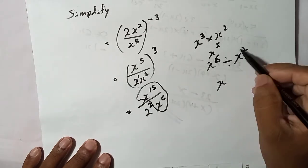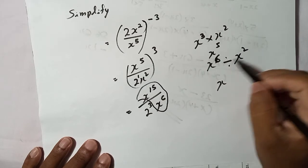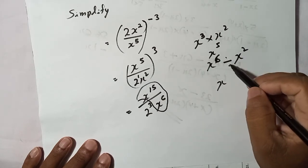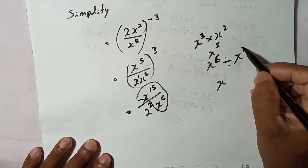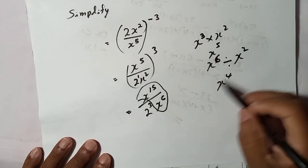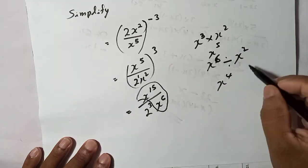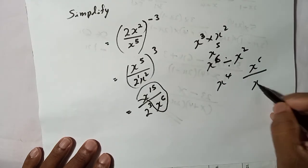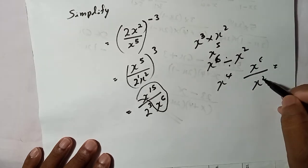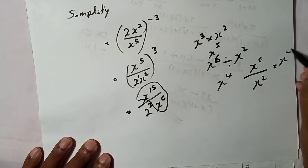Just subtract these indices if you have division. You should subtract: 6 minus 2 will be 4 like that. Here also, same thing. You can write this like x to the power 6 divided by x to the power 2, so the basic idea is 6 minus 2, so it will be x to the power 4.